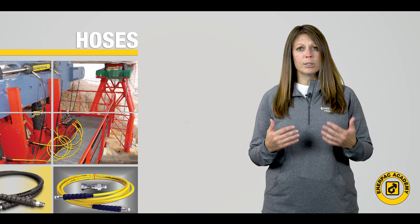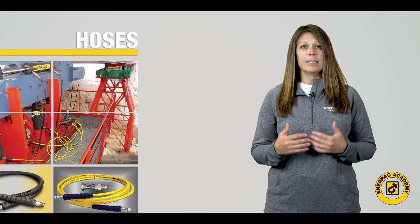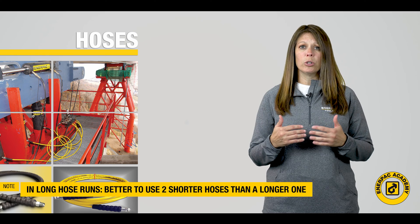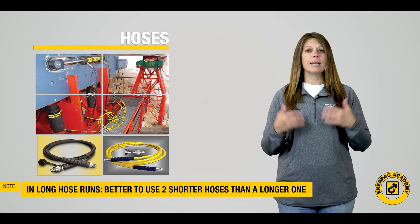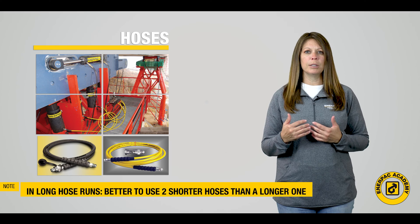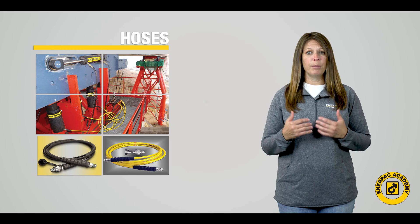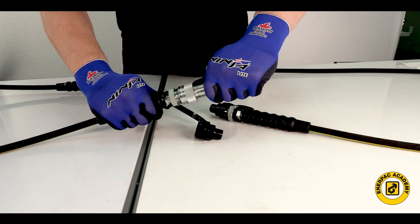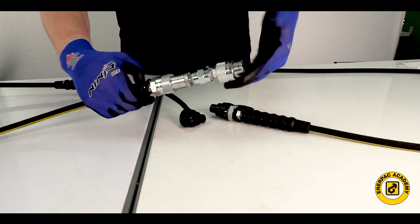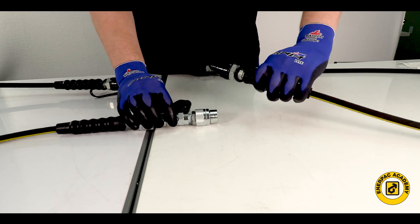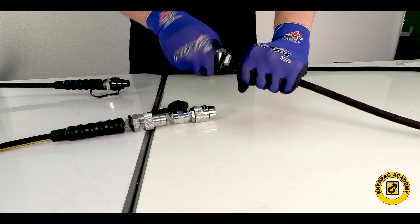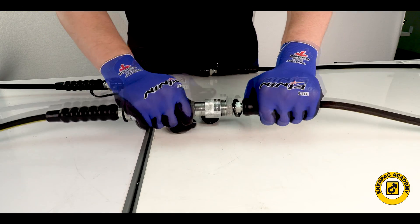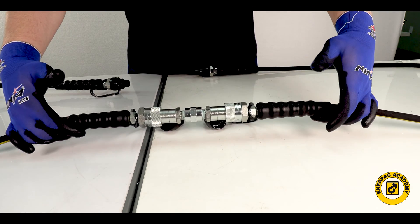When longer hose lengths are necessary, it is advantageous to create a longer hose by coupling two or three shorter hose lengths together. A sample of this would be to build a 100 foot or 30 meter hose by assembling two 50 foot or 15 meter hoses together with a connector fitting. If this hose gets damaged in any way, the damaged section can be replaced instead of losing the entire hose, reducing overall costs.